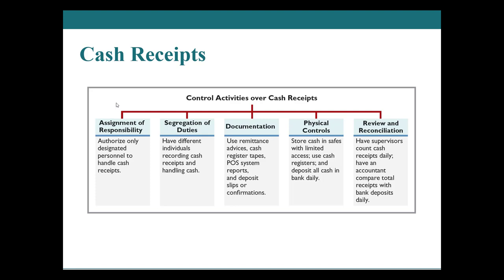We can apply control activities to cash receipts. You can assign one person to handle cash, have different people receiving versus handing out cash, and another person reconciling it. We can use documentation — every time we receive cash, we issue a receipt, and every time we deposit that cash, we get a deposit slip. We use physical controls like cash registers and frequent deposits. And we have review and reconciliation — comparing how much cash we think we have versus how much we actually have on hand and in the bank.